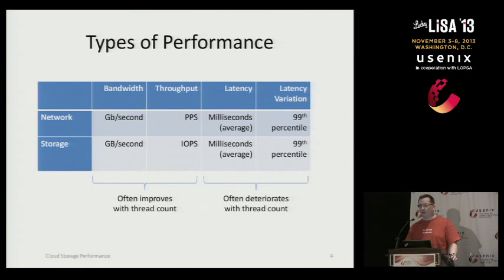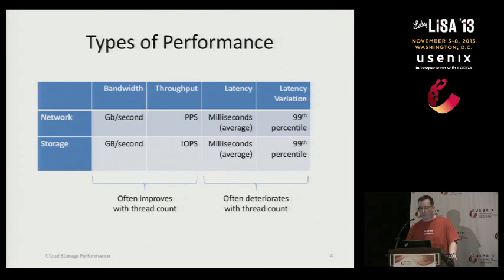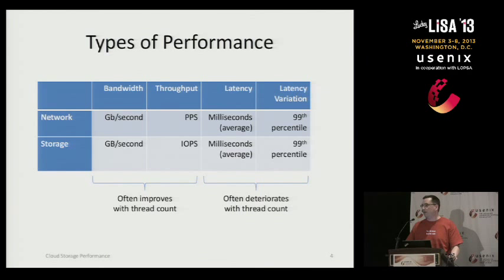Things get more interesting when you start talking about throughput in terms of operations per second — in the storage world, this is IOs per second. You'll start to see a lot more differentiation between solutions; some handle it more smoothly and more consistently than others. When you start looking at latency and how it varies with offered load, you'll often see a graph of offered load versus actual throughput or offered load versus latency. You can add threads to generate more load and see throughput increase, but latency may also increase.